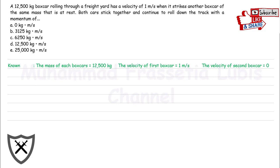Based on the problem, we know that the mass of each box car is 12,500 kg. The velocity of the first box car is 1 meter per second. The velocity of the second box car is 0.